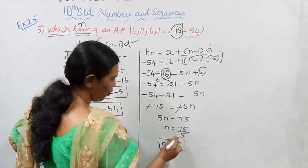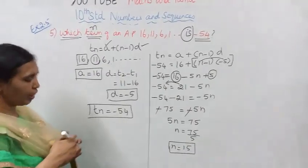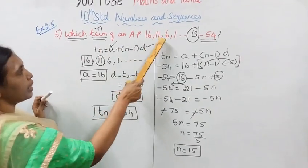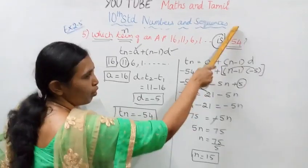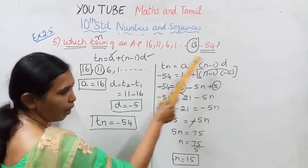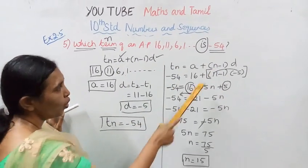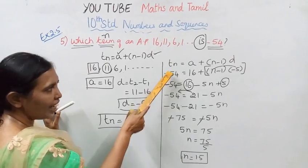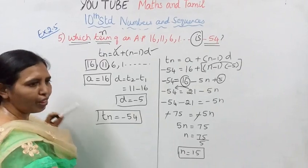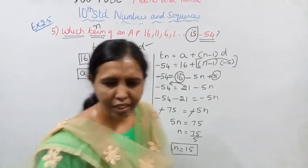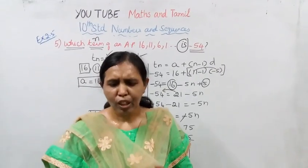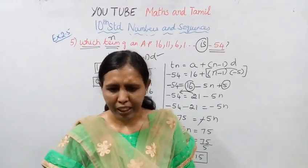Which term of an AP 16, 11, 6, 1 is minus 54? Using the formula TN equal to A plus N minus 1 into D, the answer is 15. This channel helps you to get 100 marks. Subscribe to this channel and click the bell button.